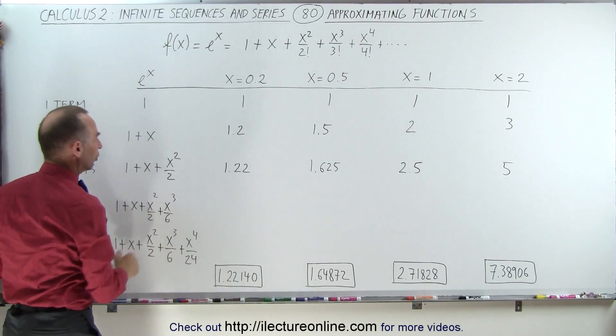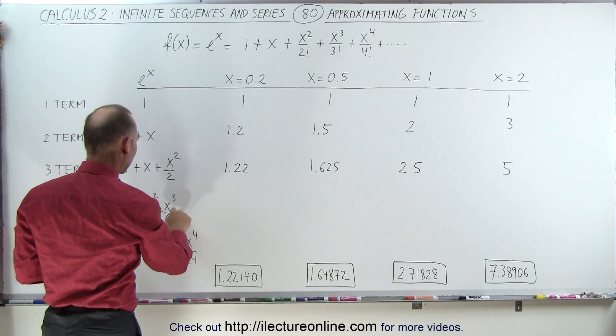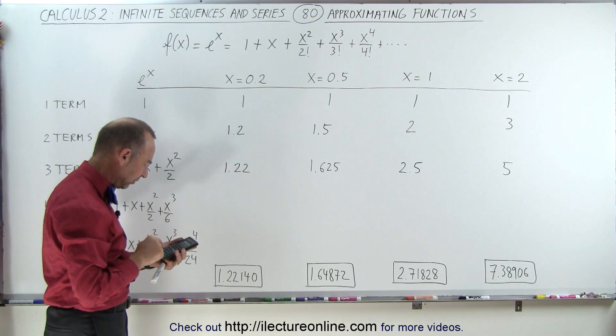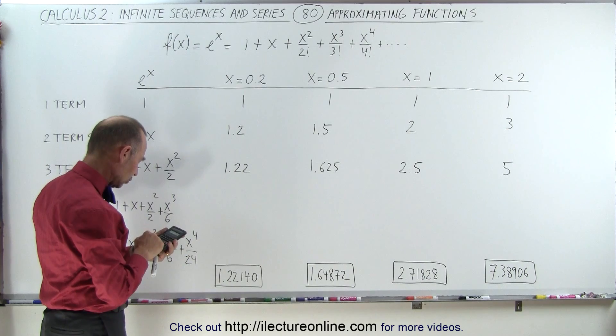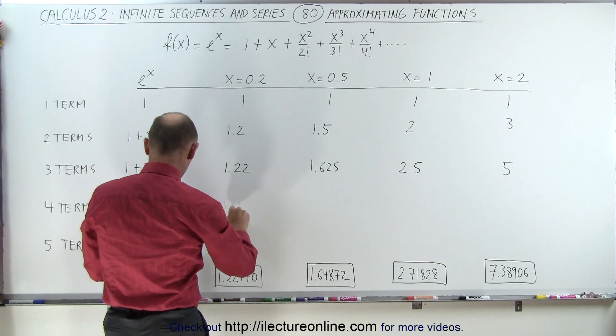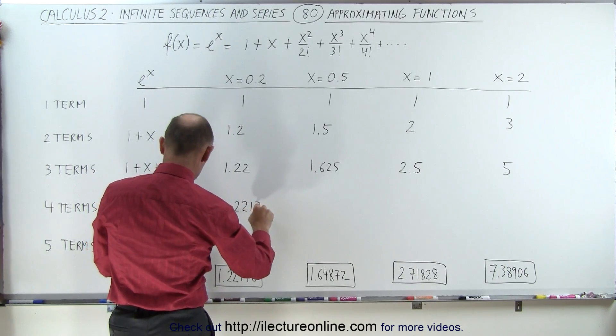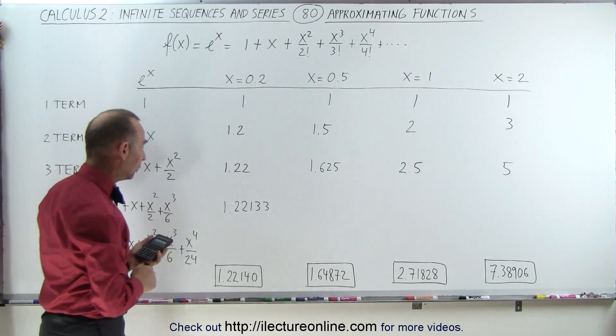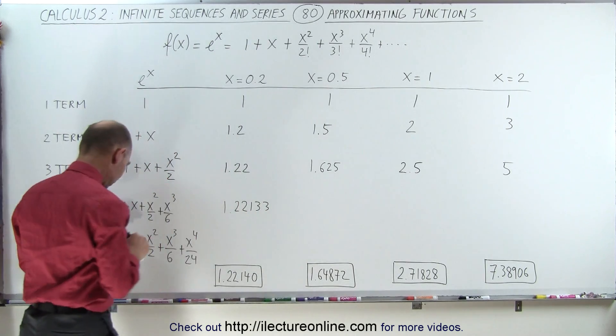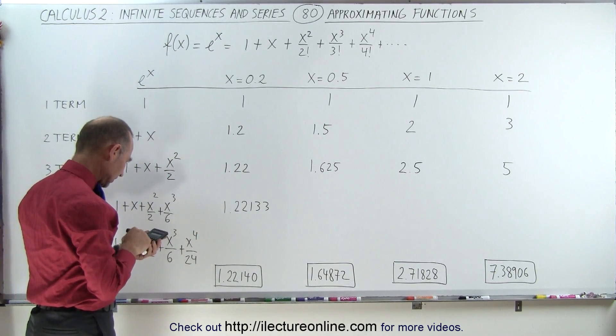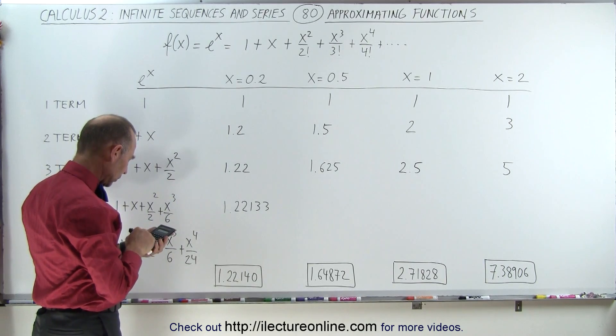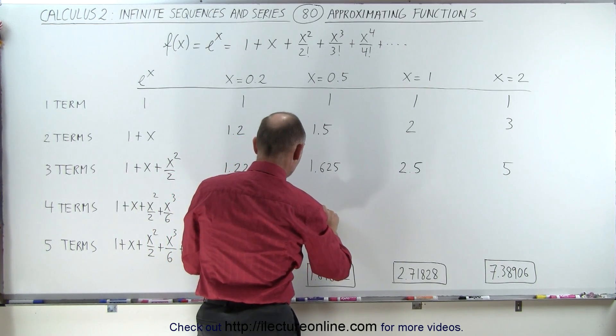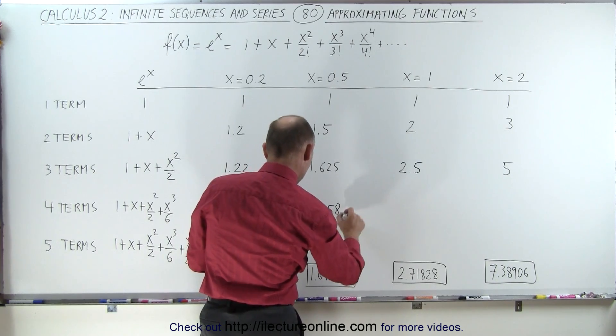What happens when we go to four terms? Now we're going to add an additional after 1.22, we get 0.2 cubed divided by 6. So 0.2 cubed divided by 6, and we add that to 1.22. And now we get the value of 1.22133. And notice we're getting very close. You already have the first three decimal places correct. How about the next one? So here we plug in 0.5 cubed, 0.5 cubed divided by 6, add that to 1.625. And now we get the value of 1.64583. And one more would be 3.